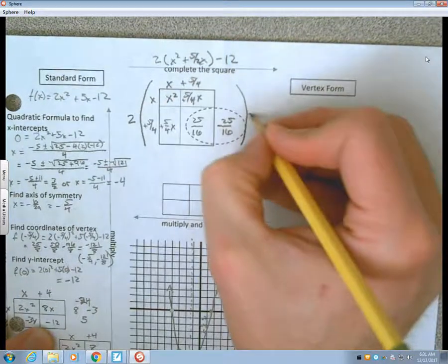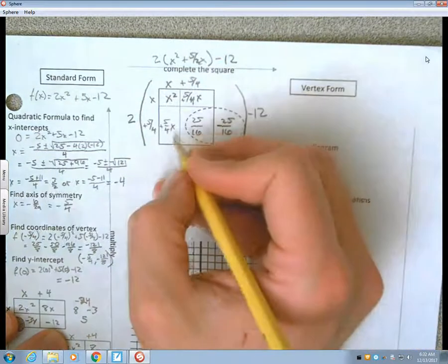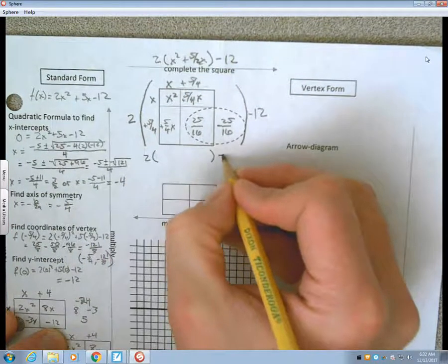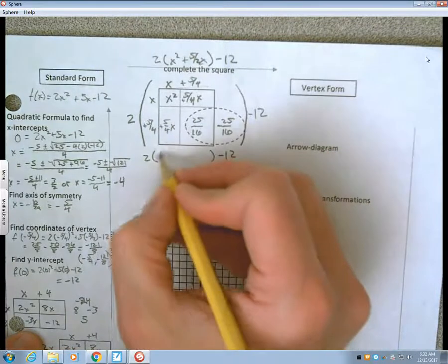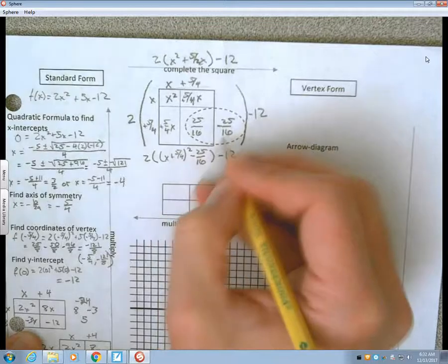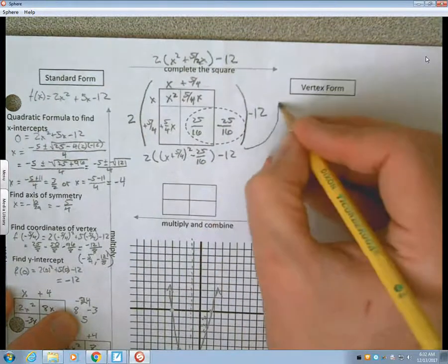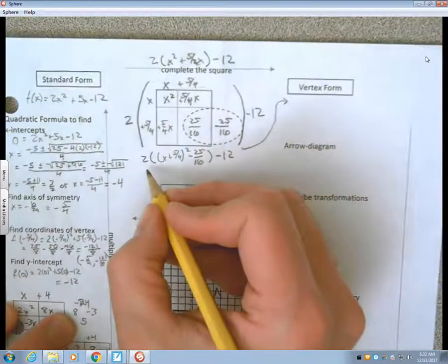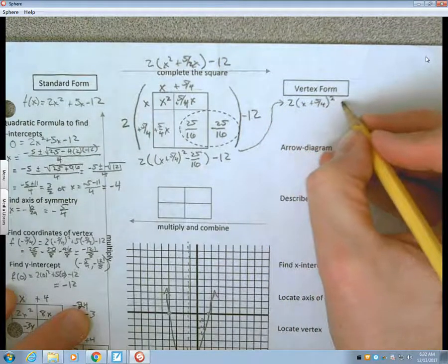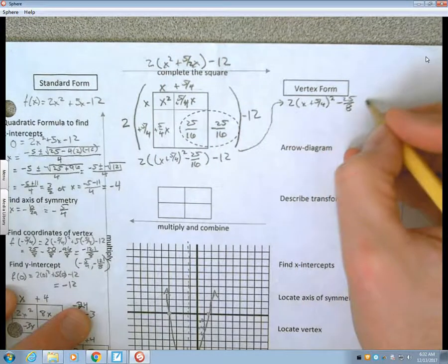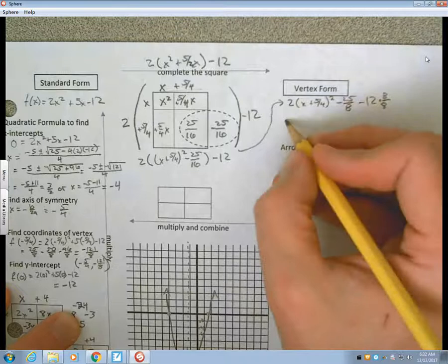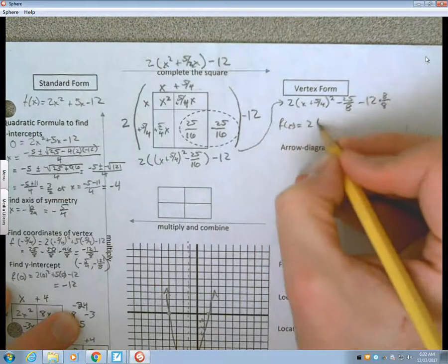I'll now rewrite this as the area of the square. So, I have the 2, and the parentheses still with a minus 12. The square is an x plus 5 fourths squared, minus 25 sixteenths from the outside piece. And, if I take that up here, I'll do some simplifying up there. Distribute the 2 through. So, that's 2 times x plus 5 fourths squared, minus 25 eighths, minus 12, which we will convert to 96 eighths. And, I get f of x is equal to 2 times x plus 5 fourths squared, minus 121 eighths.